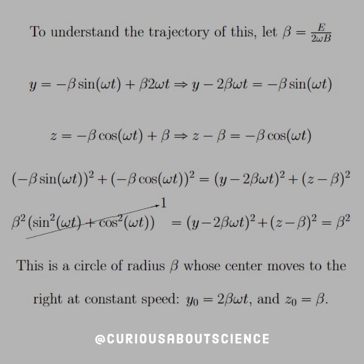So now to see what this thing actually looks like in motion. To understand the trajectory of this, let beta equal e over 2 omega b, just for simplicity's sake. Then we know that y is equal to negative beta sine omega t plus beta 2 omega t. We're going to solve this for the sine term. And similarly for z, we'll solve that for the cosine term. We'll square both sides of it and add them together as such. And we see that after some simplification, we get the sine and the cosine canceling to 1 thanks to that identity.